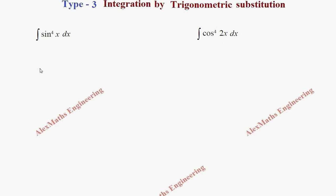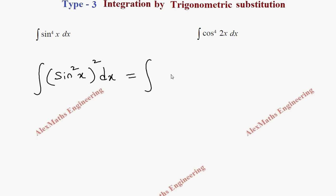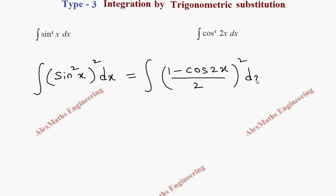The first problem is the integral of sine to the power 4x, which can be written as (sin²x)² dx. We have a formula for sin²x which is (1 - cos 2x) / 2, and we square that whole expression.